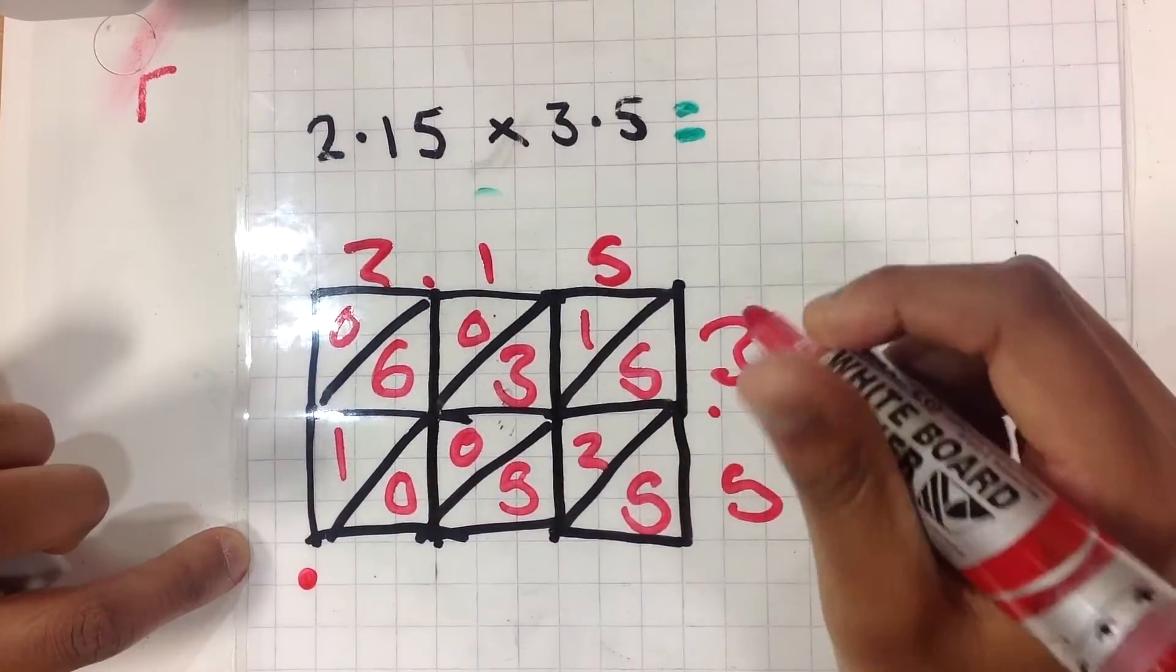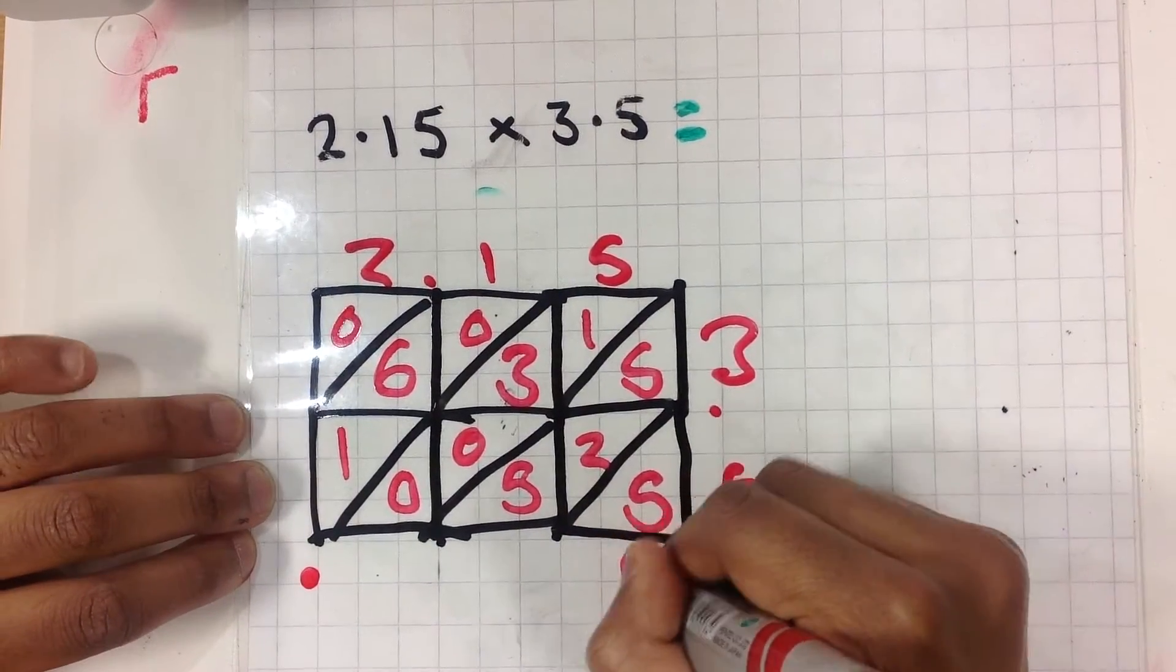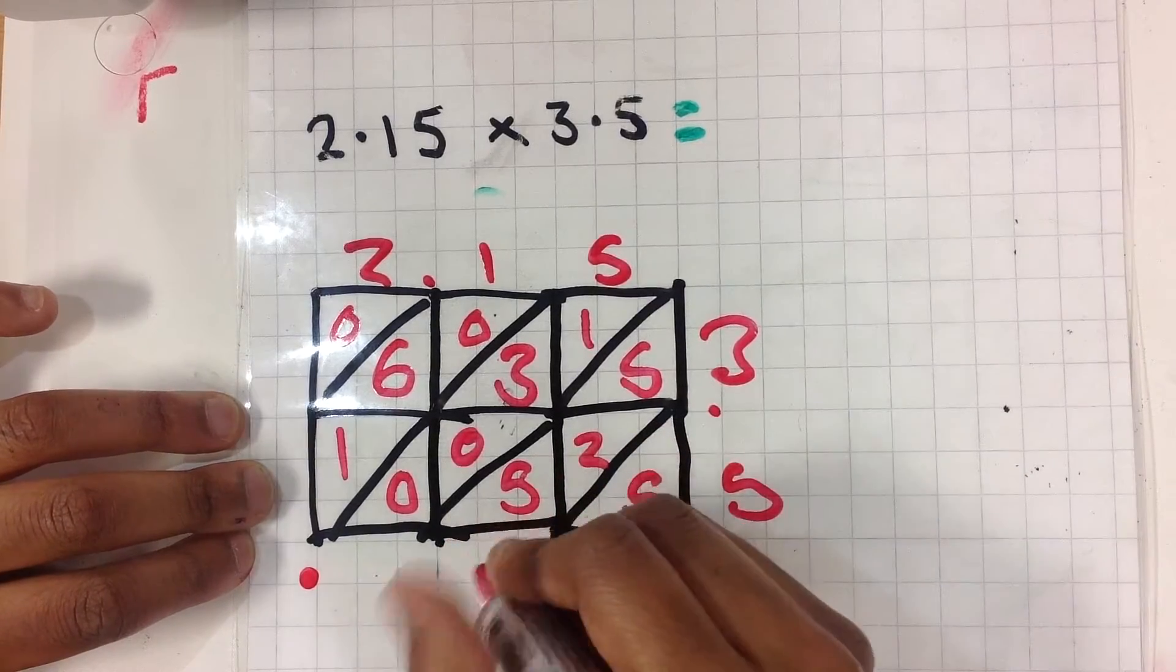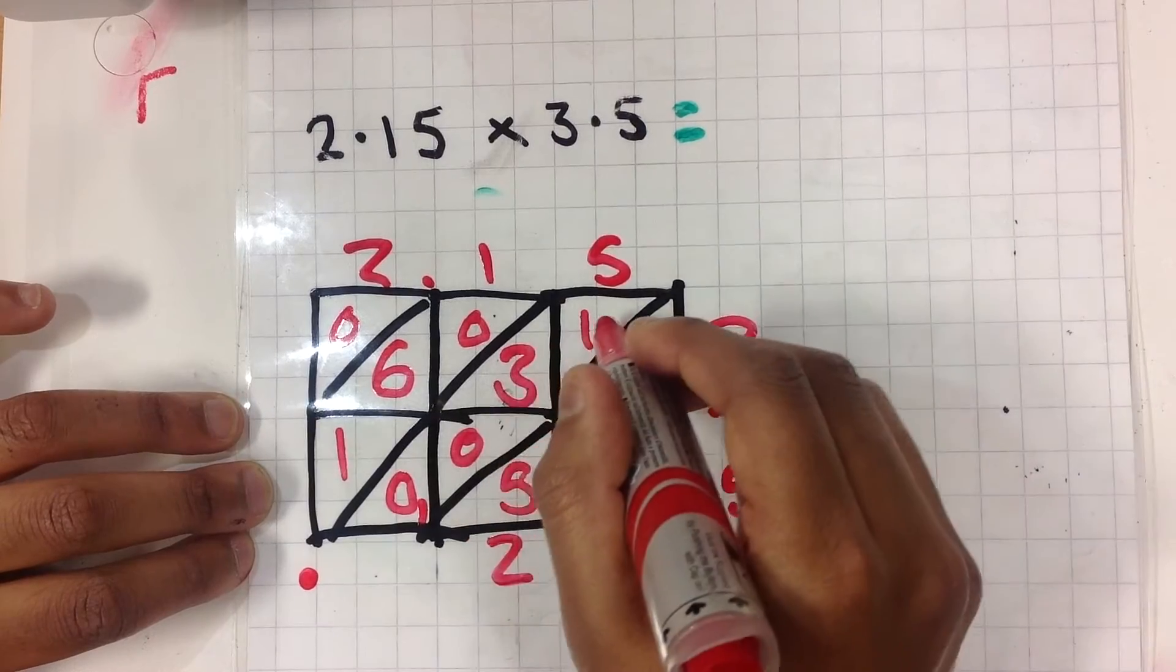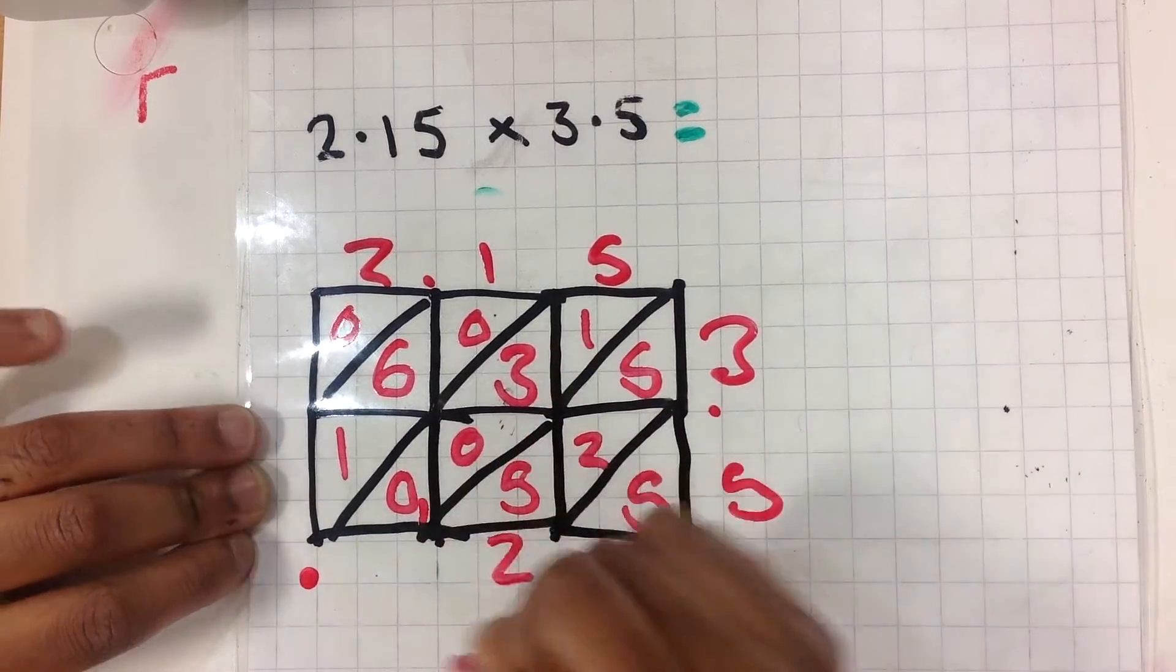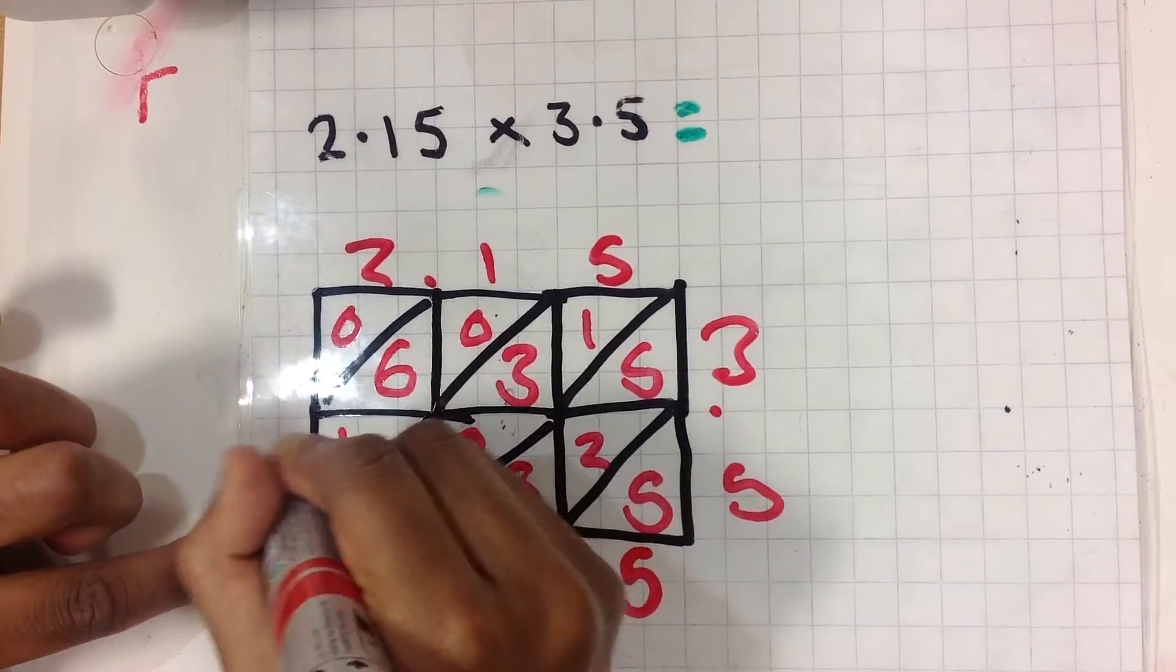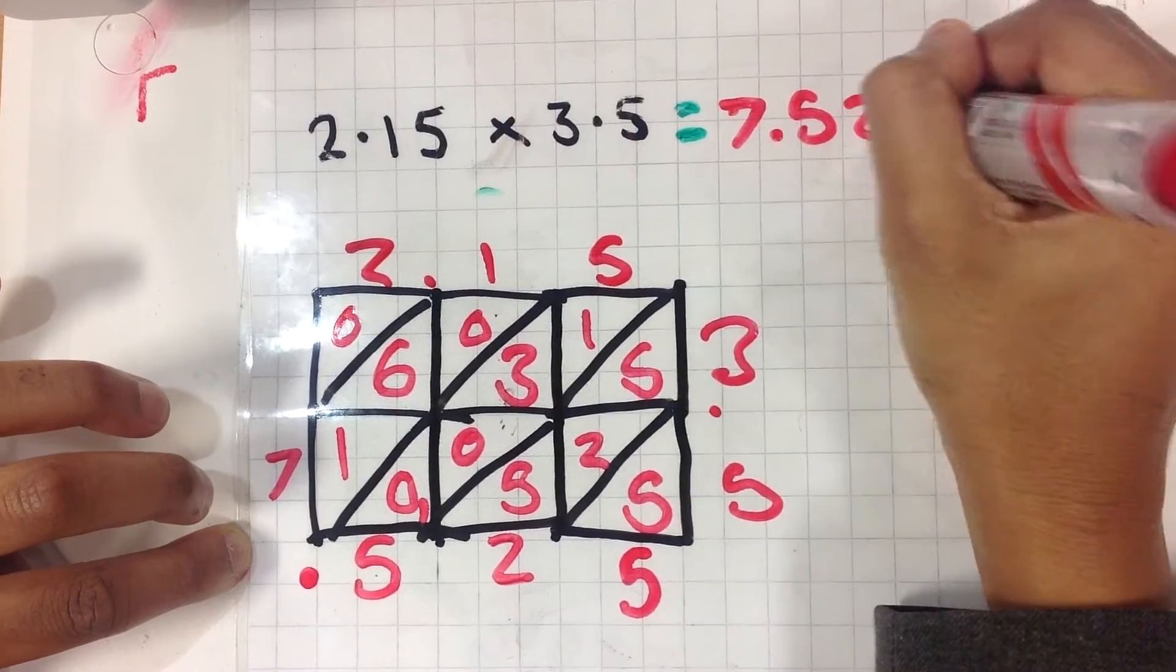And then you add them all up. So 5 plus 5 equals 10. Add 2. It's 12. And then carry the 1. And then 3 add 1. Add 1 equals 5. And then 1 add 6 equals 7. So the answer will be 7.525.